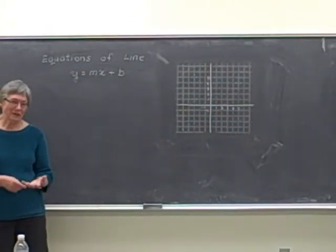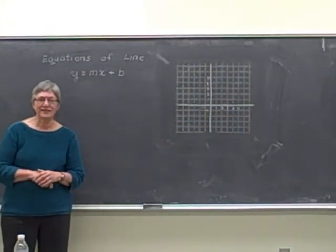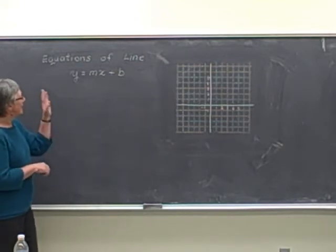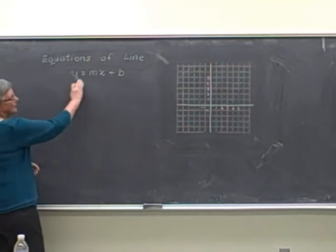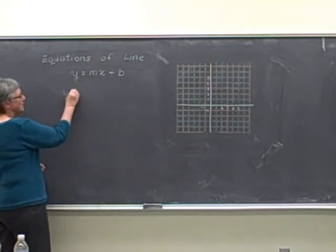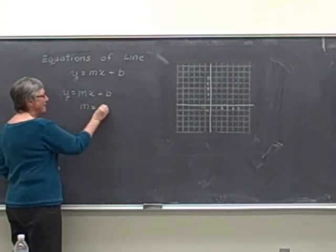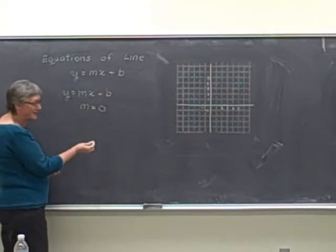There are a couple of other special kinds of equations of lines that sometimes seem a little bit confusing, and we're going to look at those two examples next. One is a special case when I have the form of y equals mx plus b, but the m, the value of m, the slope, is equal to 0.